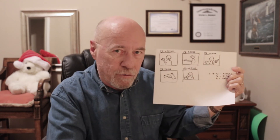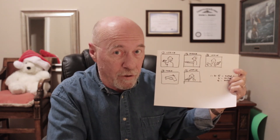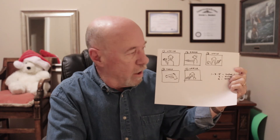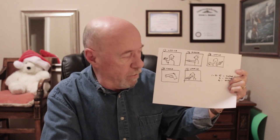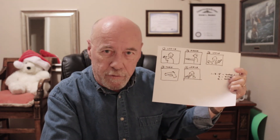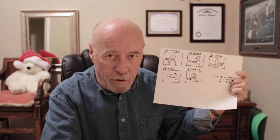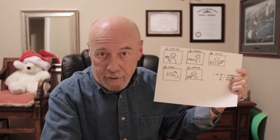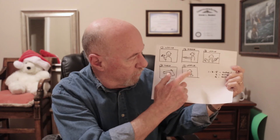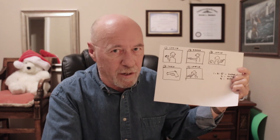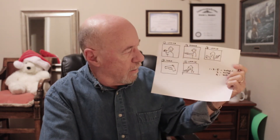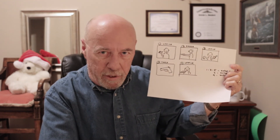Then we have another scene in the office where the narrator tells the viewer how he liked the gun, how it shot, how it performed. Then we have a tabletop review where the narrator takes the gun apart, shows all the parts and features, and shows how to put it back together. And then a final scene where the narrator sums up everything about the gun and gives his or her recommendations.